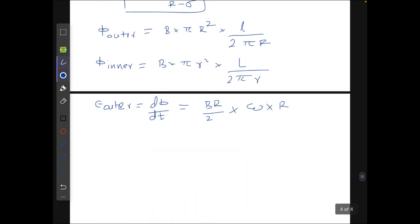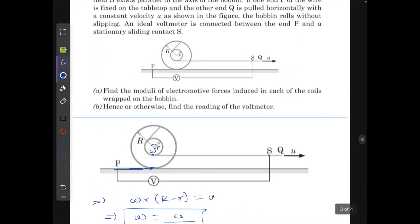because the conducting wire will be unwinding from the outer sphere at the rate of omega times capital R. Similarly, EMF induced in the inner cylinder will be d phi inner over dT, which will be equals to B r by 2 times omega times small r. Substituting the values of omega we can get the value of E outer and E inner. This is the answer for part a.